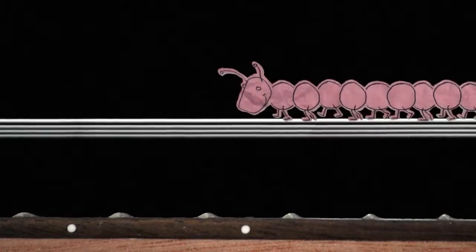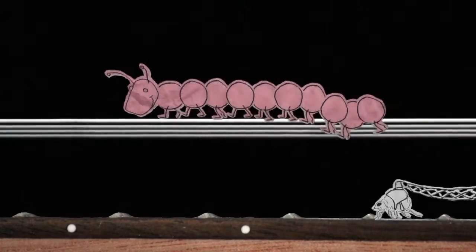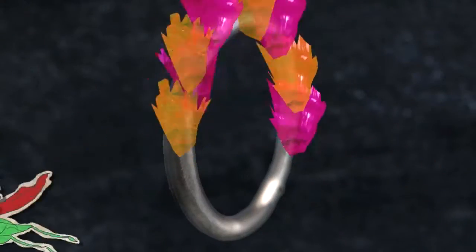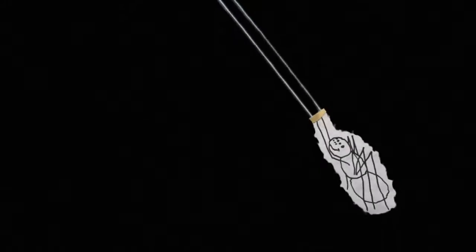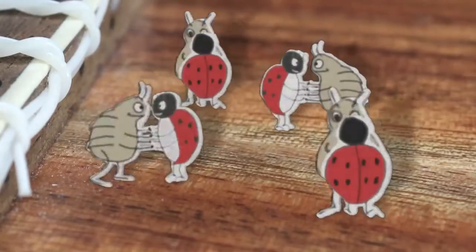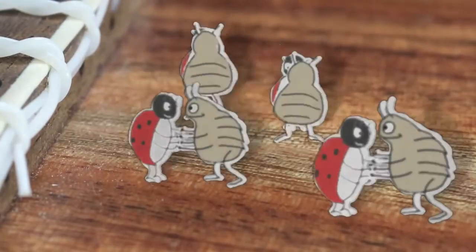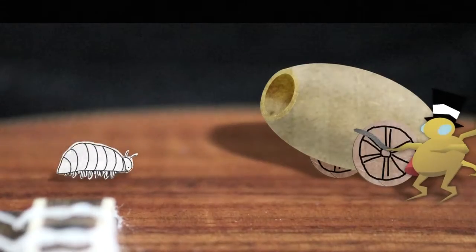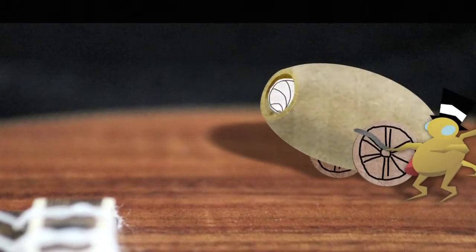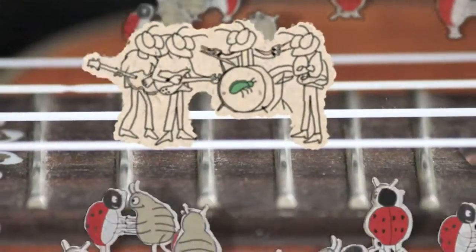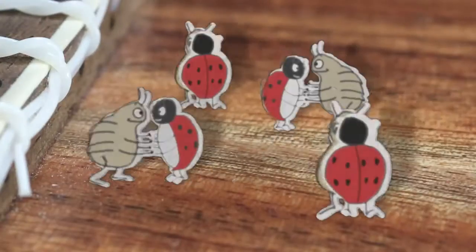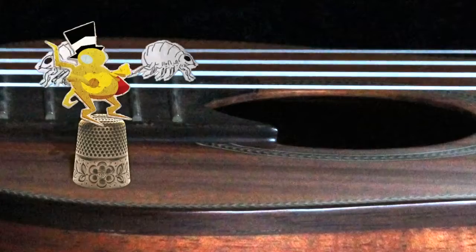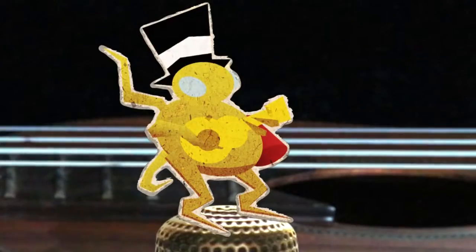The centipede balances on the high wire. Grasshoppers jump through an earring of fire. Spiders are swinging upon the trapeze. Ladybugs dance with the acrobat fleas. Pill bugs are shot from a can. The Beatles play in a band. The Jumping Flea Circus is the best in the land.